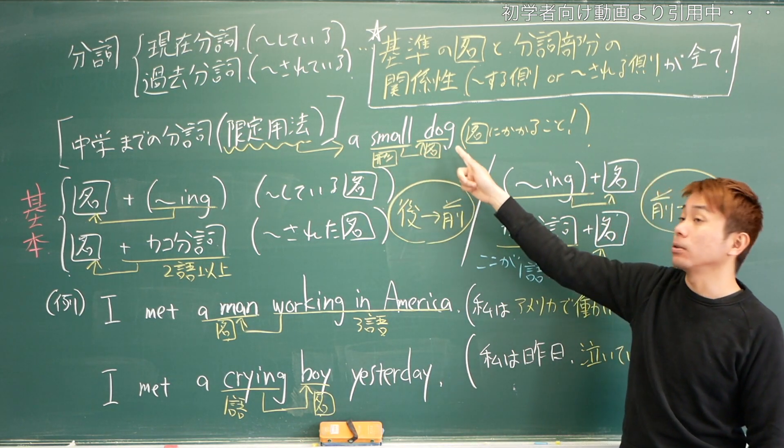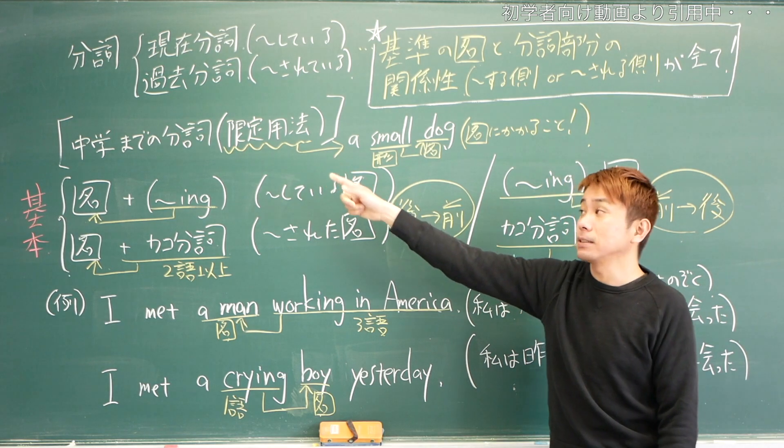つまりその名詞とその分詞部分がするの関係なのか、されるの関係なのか、その関係性が全てで、する側の関係が成り立っていたら現在分詞を使えばいいし、その名詞がされるの関係を作っていたら過去分詞に変えてあげればいいです。限定っていうのは、a small dogみたいな感じで、形容詞の時に使うような言葉なんですが。